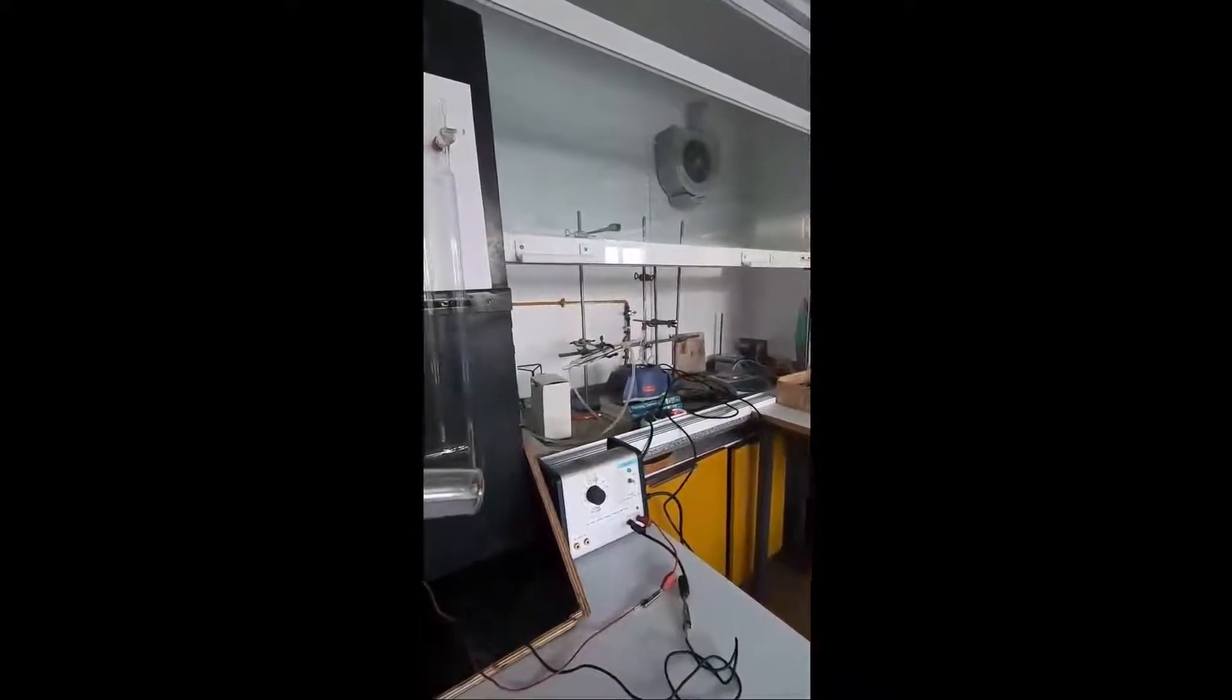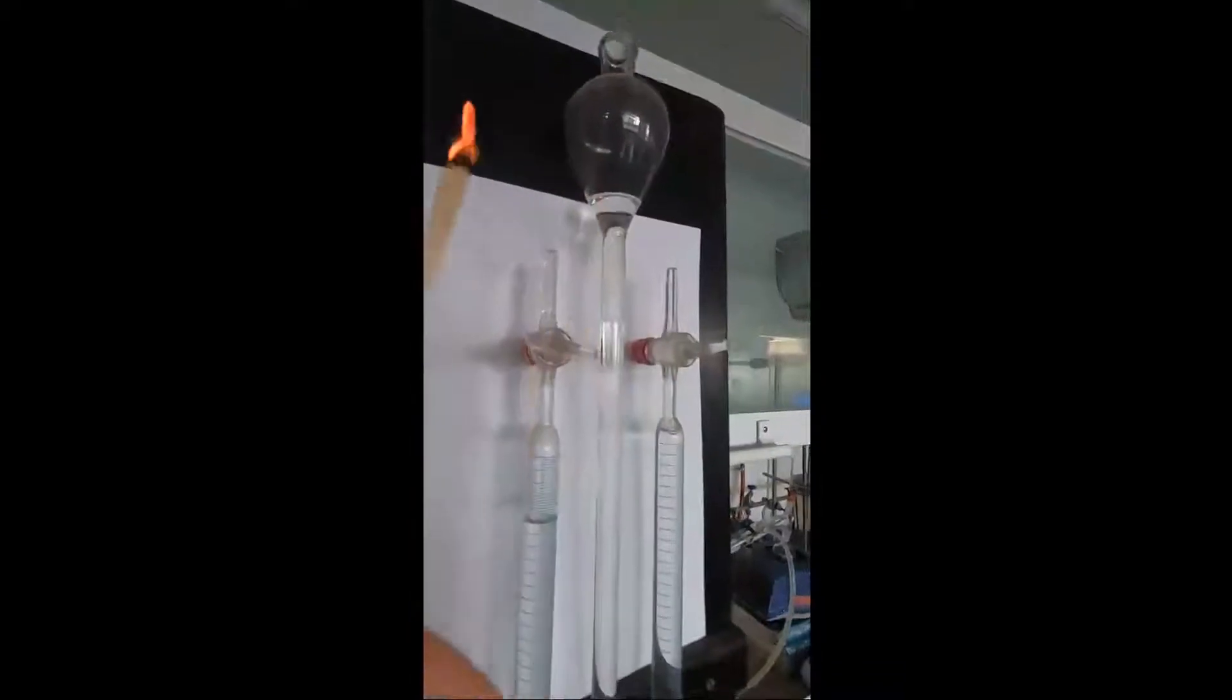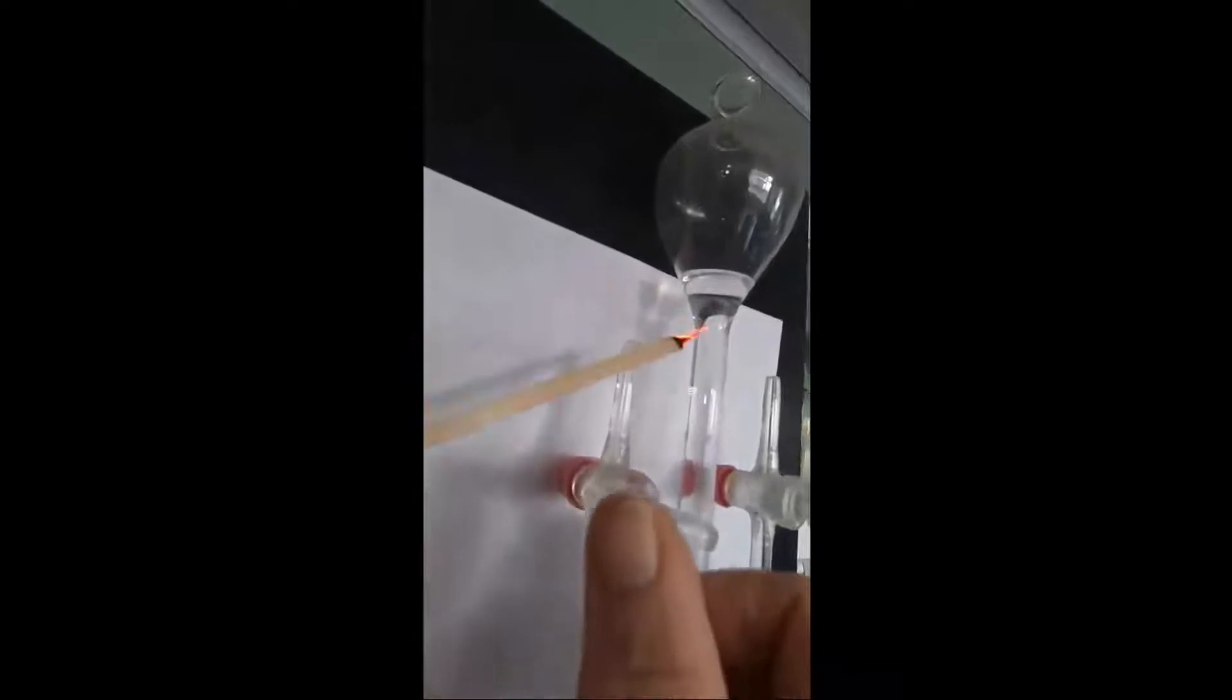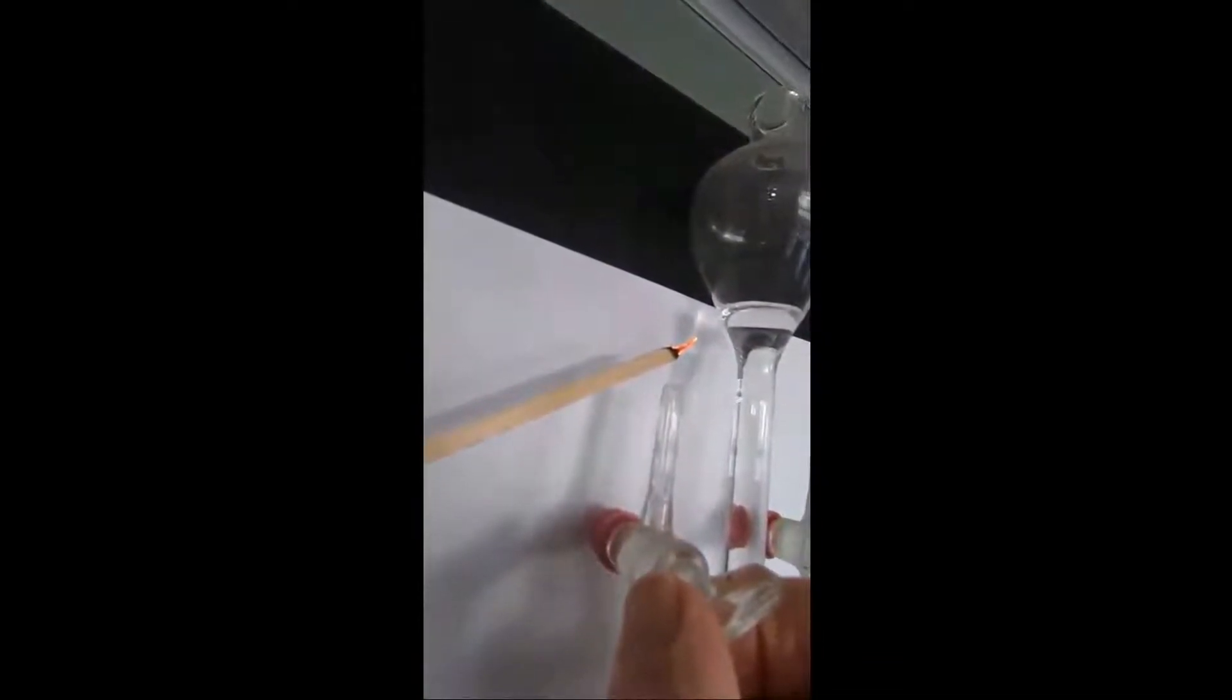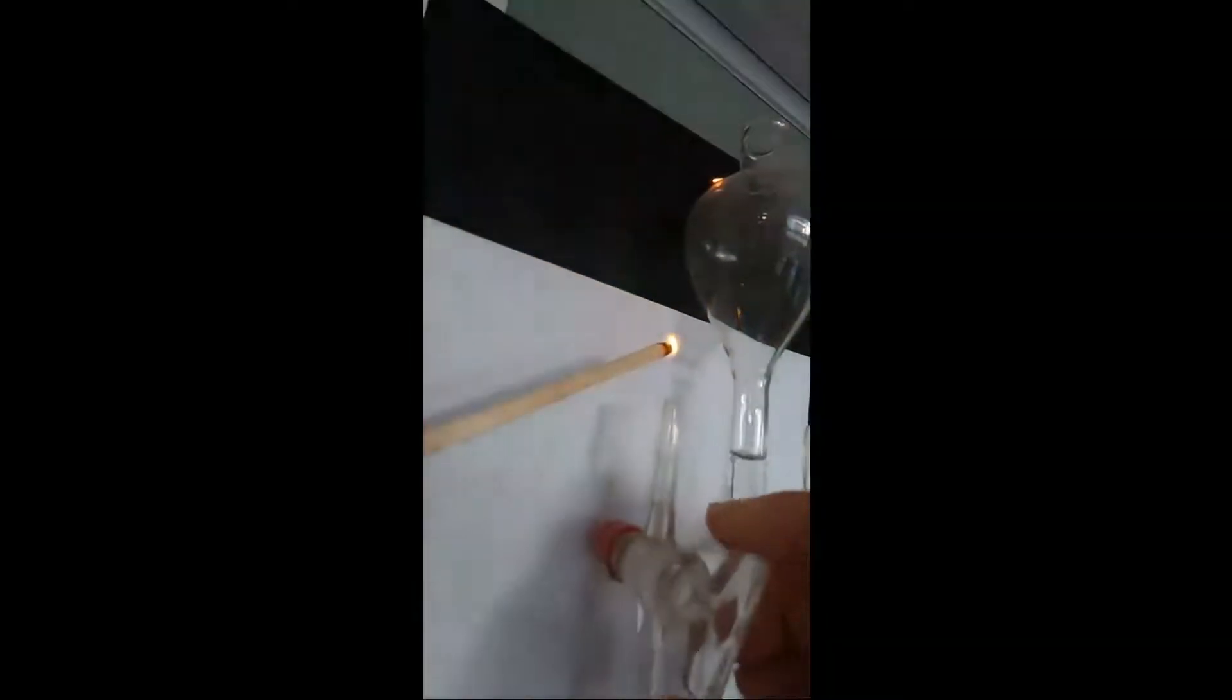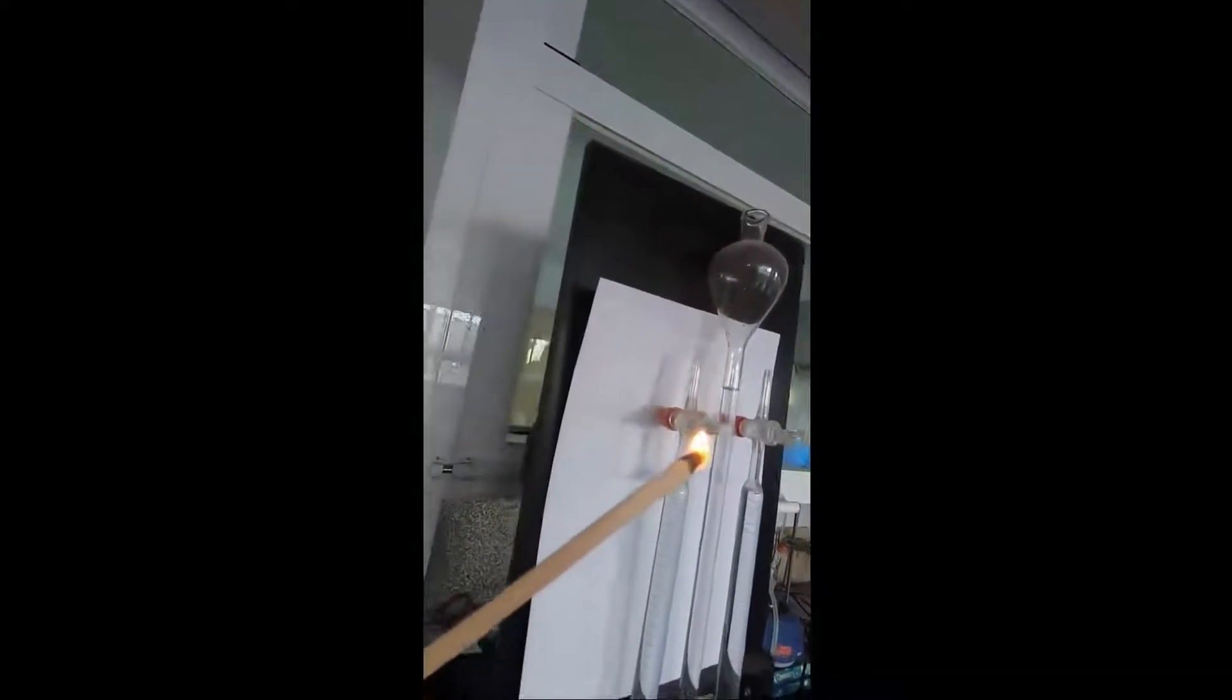We don't have very much of the other gas. I'm just going to blow out this splint and just hold it above the nozzle there. Let's see if we can relight it. Just open the tap—and the splint relights. When we relight a glowing splint, we know we've got oxygen present.